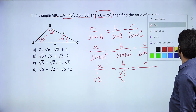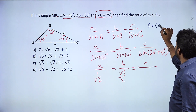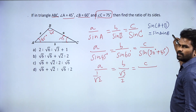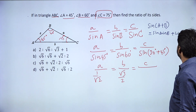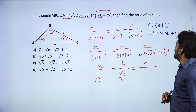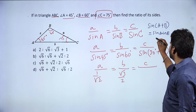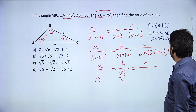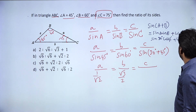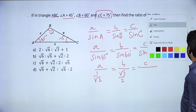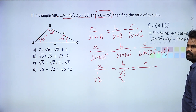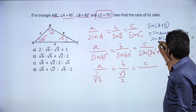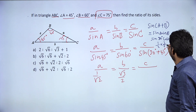We apply the formula sin(A + B) = sin A cos B + cos A sin B. So sin 75 = sin(30 + 45) = sin 30 cos 45 plus cos 30 sin 45.